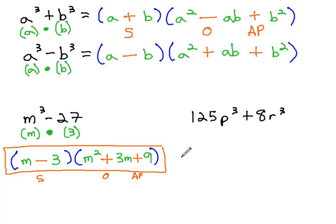If we were to multiply this out to check it, we would end up with m cubed minus 27. Let's try one more example.